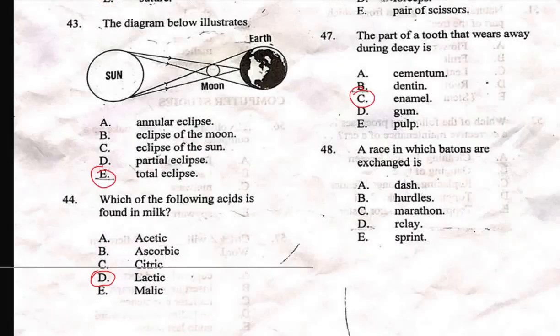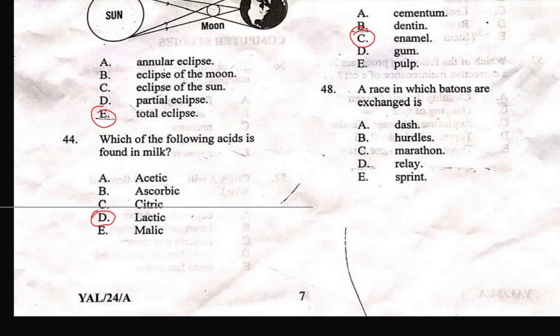Question 48 says: a race in which batons are exchanged is A) dash, B) hurdles, C) marathon, D) relay, E) sprints. The answer is relay — it is during a relay race that batons are exchanged.